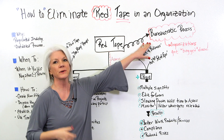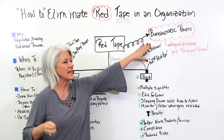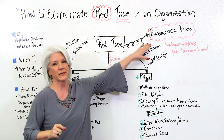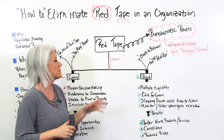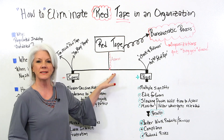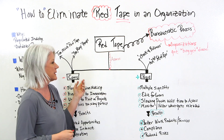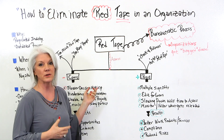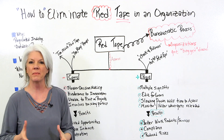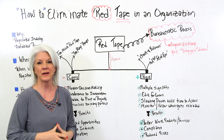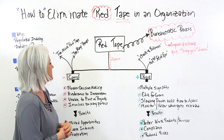It's a bureaucratic process and it bogs organizations down. One thing we want to do is assess the red tape, because we want to determine the pros and the cons. We want to talk about good red tape and bad red tape.